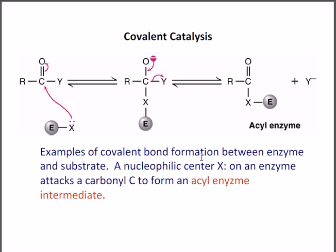Instead of a phosphate backbone, if we have a carbonyl or acylated backbone as the substrate, the same process can also occur. The nucleophilic electron pair attacks the carbon, breaking the double bond and producing an intermediate. The enzymatic portion attaches to the acyl group. Then electron donation and bond formation occur again, this part is released, and what is produced is called the acyl enzyme intermediate, because in this case the enzyme is attached to an acyl group.